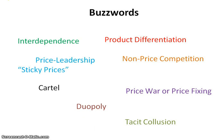An oligopoly is where you have three or more firms that dominate an industry. A duopoly is when you have two. When we talked about the prisoner's dilemma, which leads to game theory and how firms can figure out their payoff matrix, that's with two firms, so that's a duopoly.